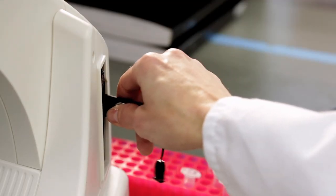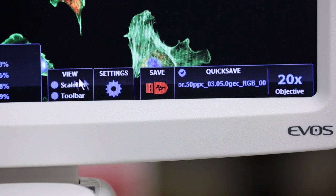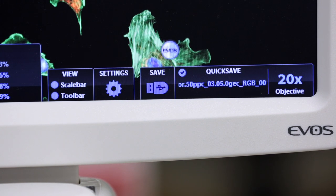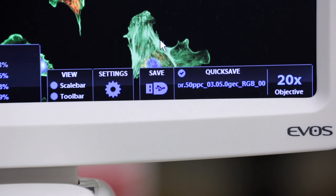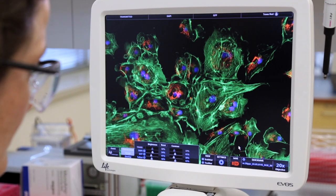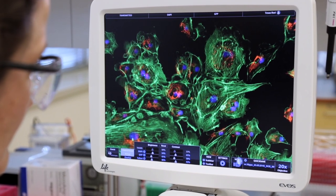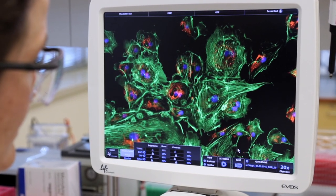High resolution images can be saved to a USB drive in JPEG, bitmap, TIFF or PNG file formats. Or the system can be connected to an internal network and be password protected. The EVOS FL imaging system also has a number of advanced features to enhance user experience.